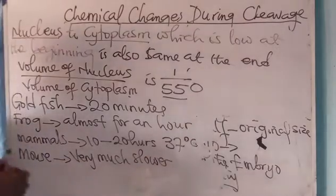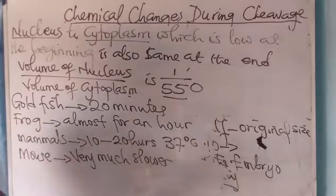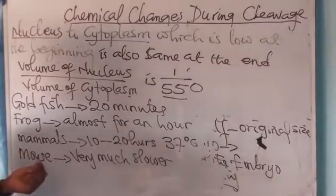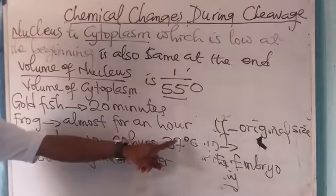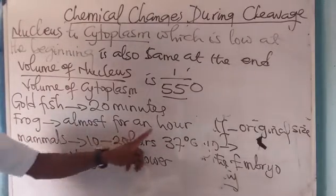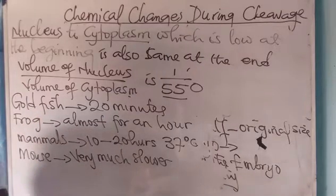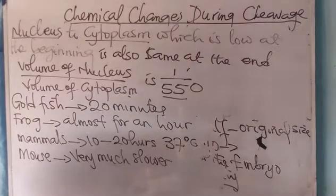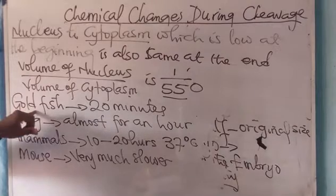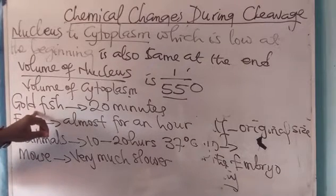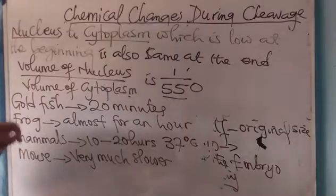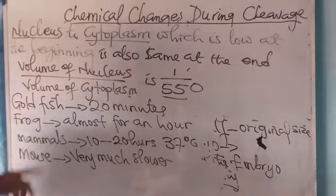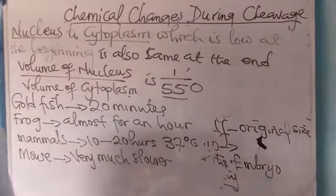In mammals, the period of cleavage occurs between 10 and 20 hours at a temperature of 37 degrees Celsius. The period of cleavage is much slower in mouse and mammals compared to frogs and goldfish. It therefore means that cleavage occurs fastest in goldfish.